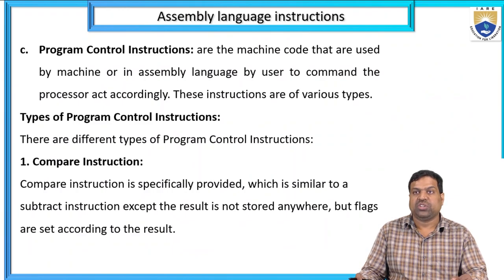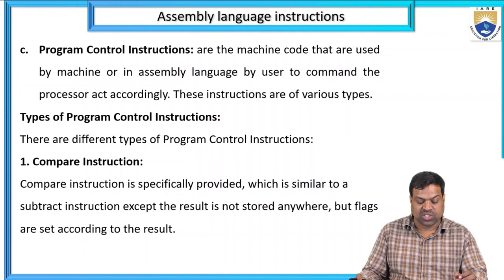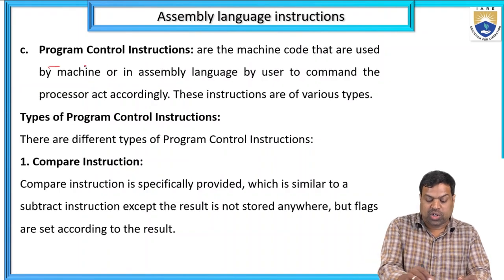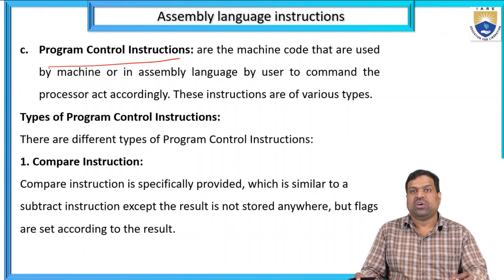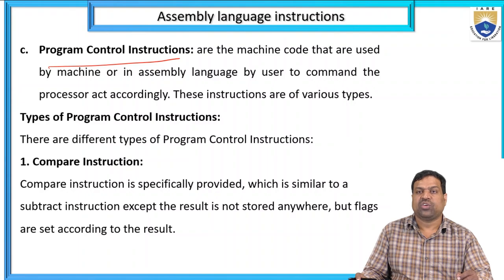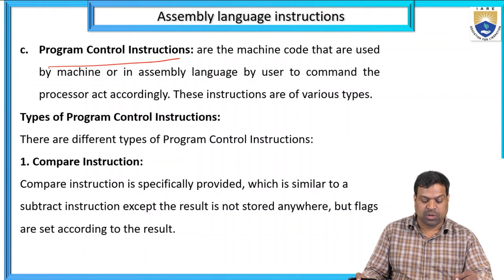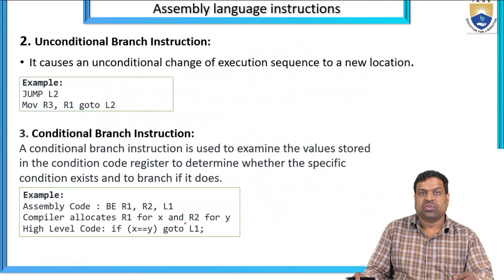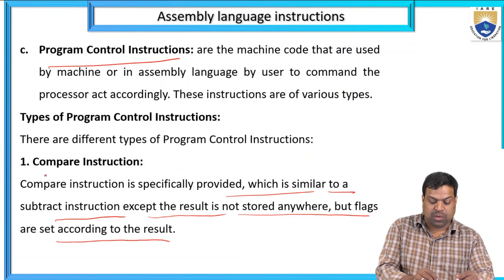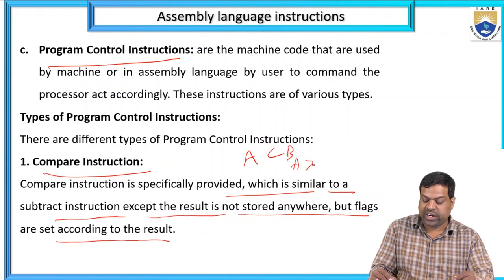Program control instructions are the machine code used by machine or in assembly language by the user to command the processor to act accordingly. There are various types of program control instructions. Compare instruction: it is specified similar to a subtract instruction except the result is not stored anywhere, but flags are set according to the results.